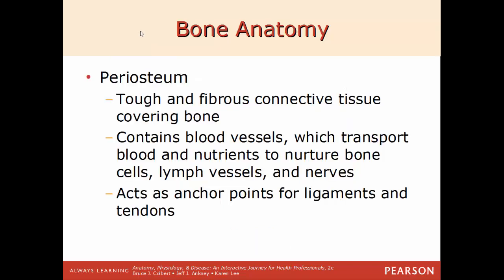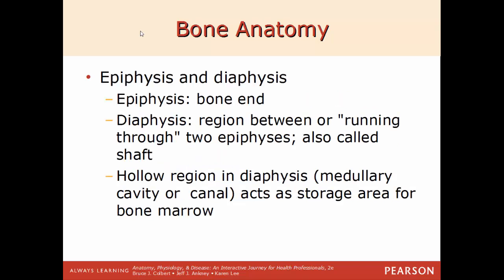Now we'll move into the anatomy of bone. First, the outermost lining, the periosteum. This is a very tough, strong layer of connective tissue that will cover the entire outside wrapping of the bone. This is where you'll find the blood vessels, which will transport blood and nutrients to nurture the bone for bone growth. You'll also have lymph vessels and nerves found here. This is what will act as an anchor point for ligaments and tendons.